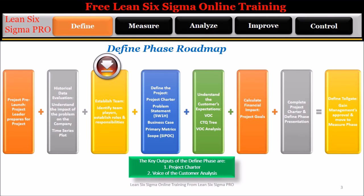Step 3: Establish team — identify team players, establish team roles and responsibilities. Step 4: Define the project. The team will begin to create the first four elements of the project charter: problem statement, created using the 5W1H tool; business case; primary metrics; and scope, created using the SIPOC tool.